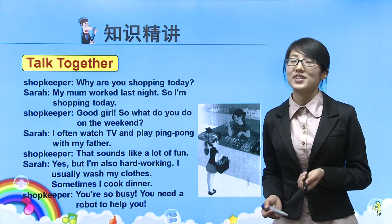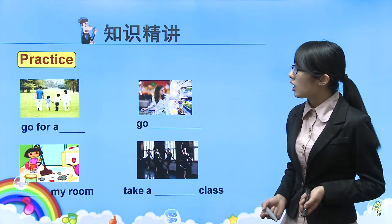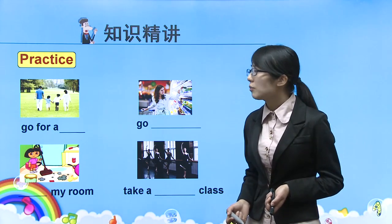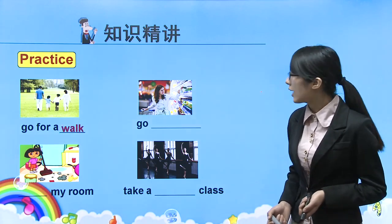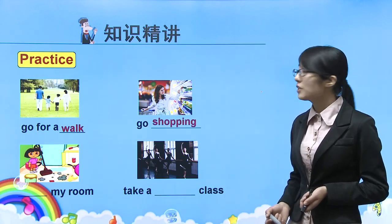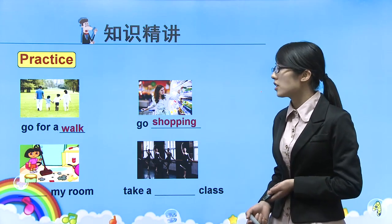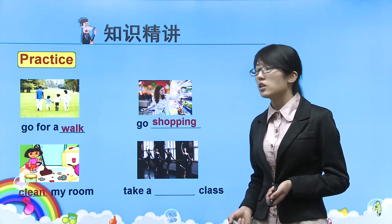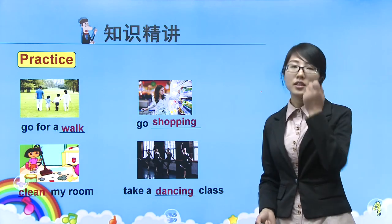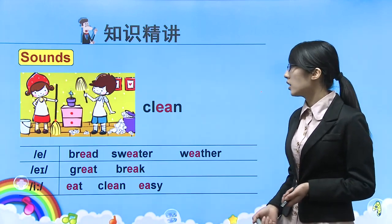Fill in the blanks，看图填写短语：第一个go for a walk，散步；第二个go shopping，购物；第三个clean her room，打扫房间；第四个take a dancing class，上舞蹈课。前面有动词原型，用原型即可，如clean my room。